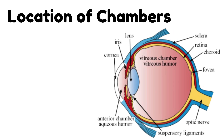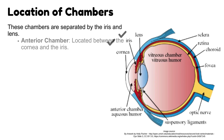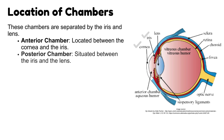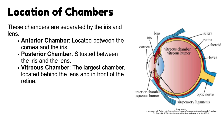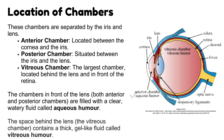What is the location of chambers in the eye? These chambers are separated by the iris and lens. The anterior chamber is located between the cornea and the iris. The posterior chamber is situated between the iris and the lens. The vitreous chamber is the largest chamber and is located behind the lens and in front of the retina. The chambers in front of the lens — both anterior and posterior chambers — are filled with a clear watery fluid called aqueous humor. The space behind the lens, the vitreous chamber, contains a thick gel-like fluid called vitreous humor.